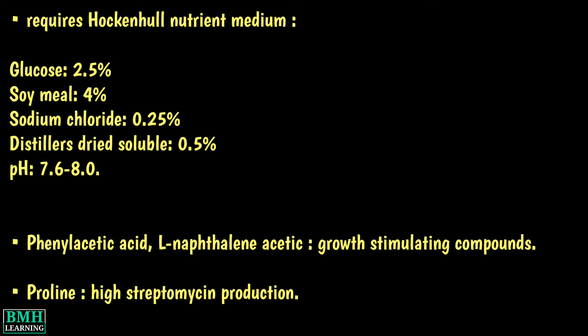For preparation of the medium, the production of streptomycin requires a nutrient medium with specific media composition. Apart from these, phenylacetic acid and L-methylene acetic acid may be added as growth-stimulating compounds. It is better to add proline into the medium, which helps in high streptomycin production.